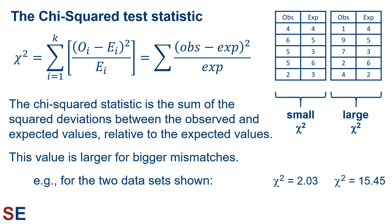The equation we'll use is shown here. The chi-squared statistic is the sum of the squared deviations between the observed and expected values relative to the expected values. This value is larger for bigger mismatches. The bigger the difference between the observed and expected values, the larger the numerators for the summed terms will be. This difference is squared to make every term positive and then divided by the expected number to measure the magnitude of these deviations relative to the expected values. The overall chi-squared then measures the overall mismatch between the predicted and observed values.